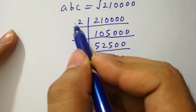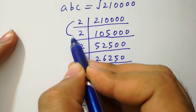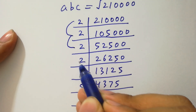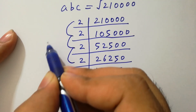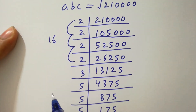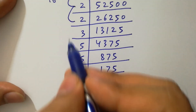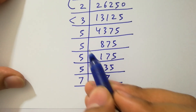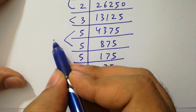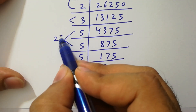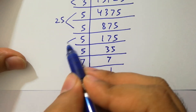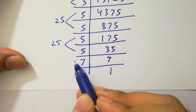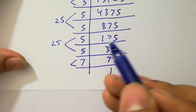Then we have here: 2 times 2 is 4, times 2 is 8, times 2 is 16. And here 3 as it is. Next, 5 times 5 is 25, times 5 times 5 is 25. And 7 as it is.